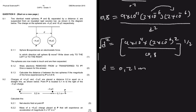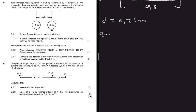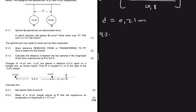Moving to 9.2: charges of +4×10⁻⁶ C and −3×10⁻⁶ C are placed 0.2 meters apart on a straight line. There is a point P that is 0.1 meters away from the −3×10⁻⁶ C charge. The first question asks us to find the net electric field at point P. E_net = E1 + E2 since we have two charges.